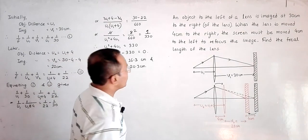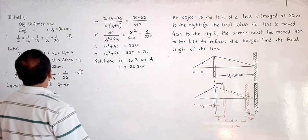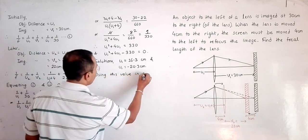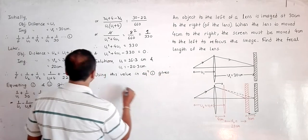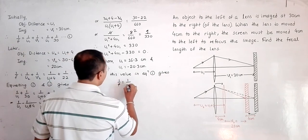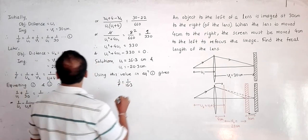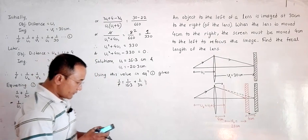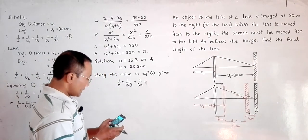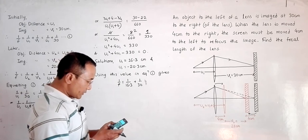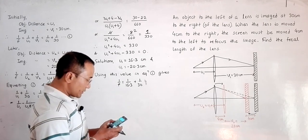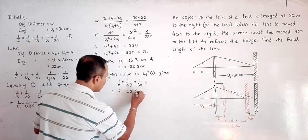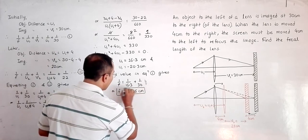Now we find the focal length using these values. Using the first value in equation 1: 1/f = 1/16.3 + 1/30. Using a calculator: the reciprocal of (1/16.3 + 1/30) gives f approximately equal to 10.6 centimeters. This is an approximate value.